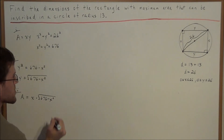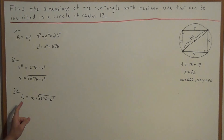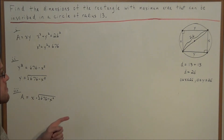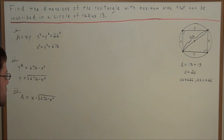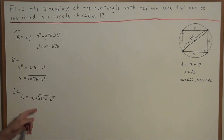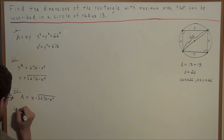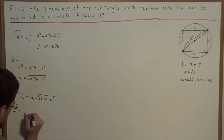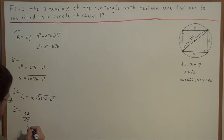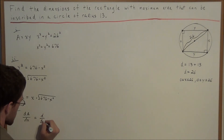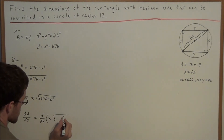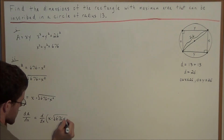This represents the area of the rectangle in terms of x — it's a function of x. If we're trying to maximize the area, we're trying to find the maximum value of this function. We take the derivative and find a critical point, showing that critical point is a maximum. So we take the derivative with respect to x of both sides: dA/dx equals d/dx of x times the square root of 676 minus x squared.